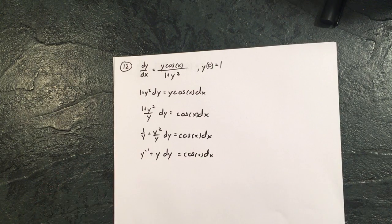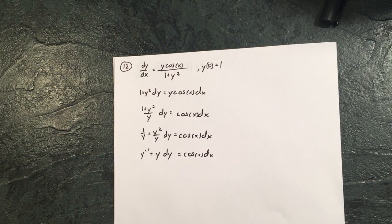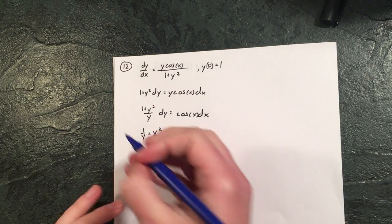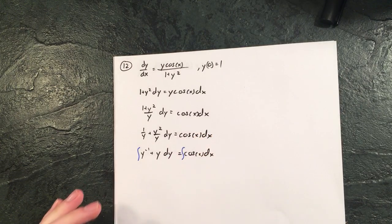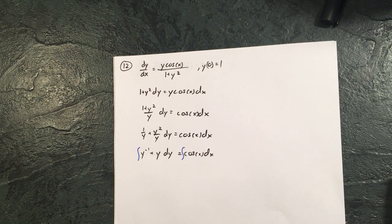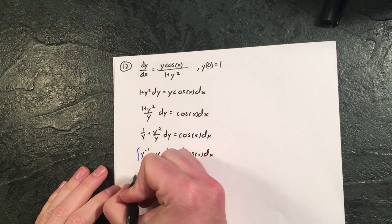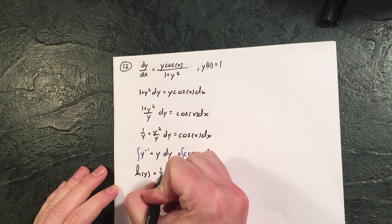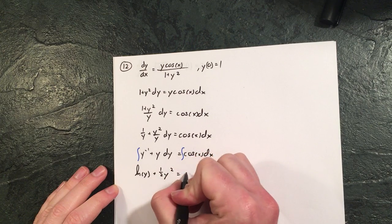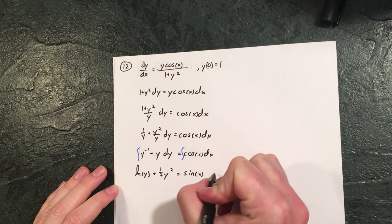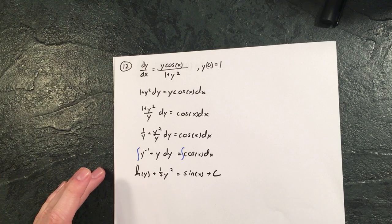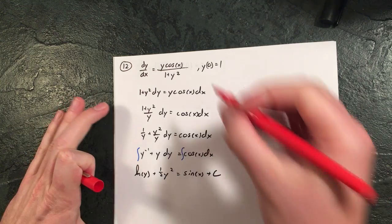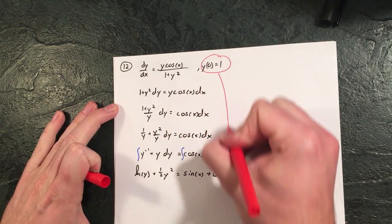So y to the negative 1 plus y dy equals cosine of x dx. Once we're here we can integrate both sides: ln of y plus one half y squared equals sine of x and we'll put the plus c over here.